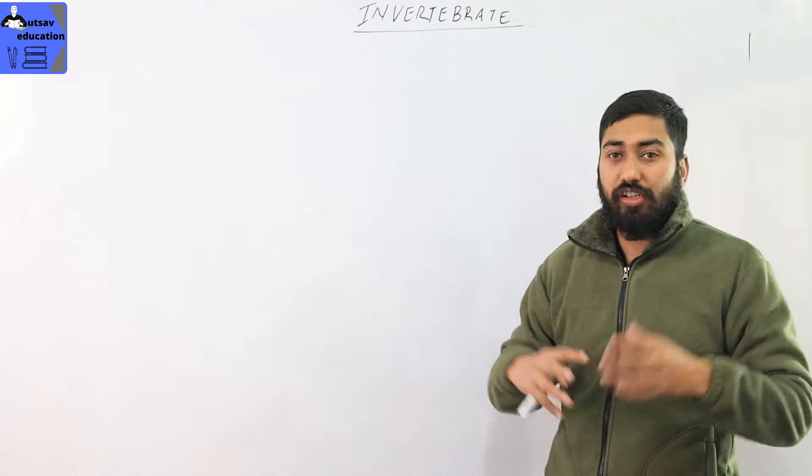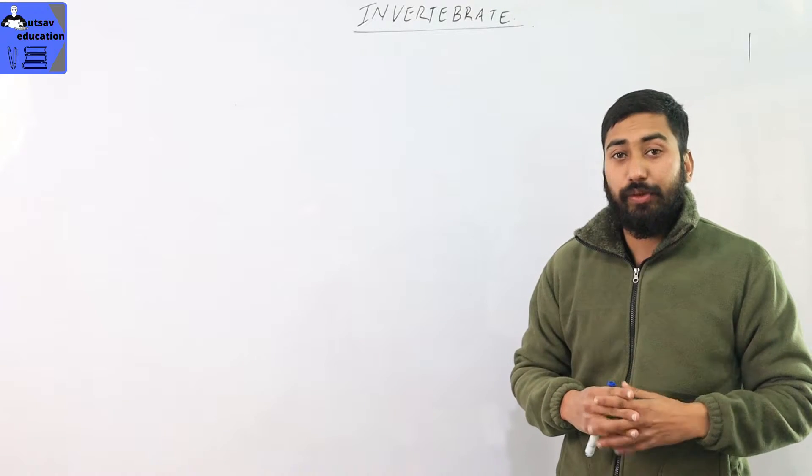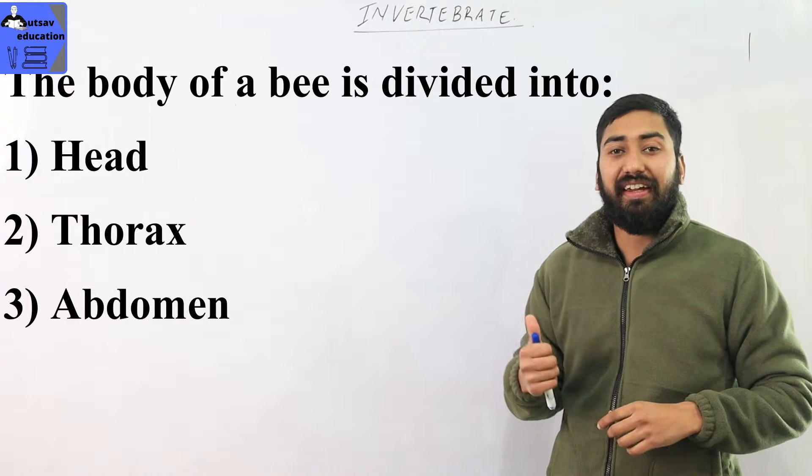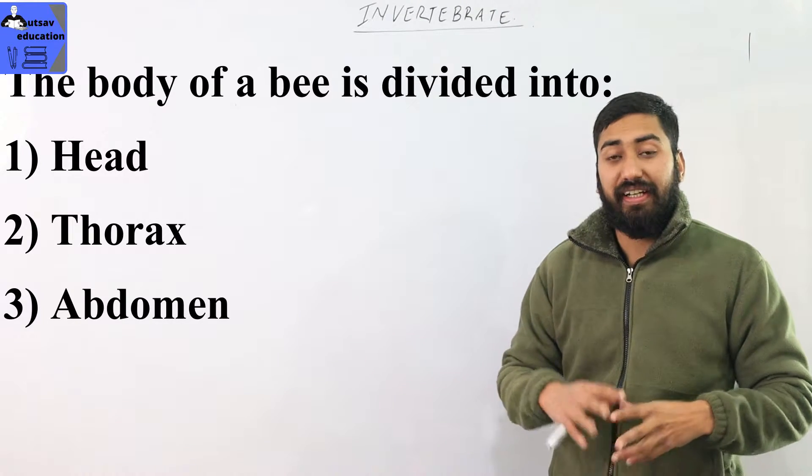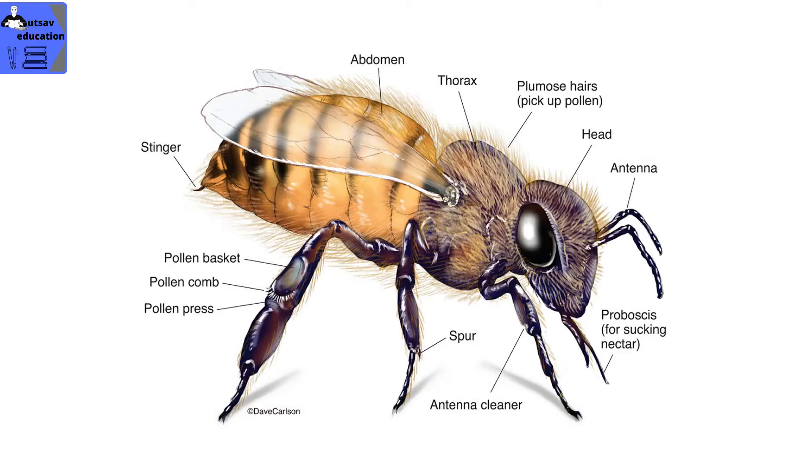The body structure, just like any other insect, is divided into 3 main parts. That is the head, thorax and abdomen. The body parts are covered by a thin layer.